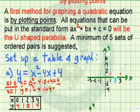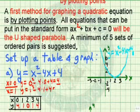So if we complete the graph, we get a parabola. It looks like U. And we label it y=x²-4x+4.